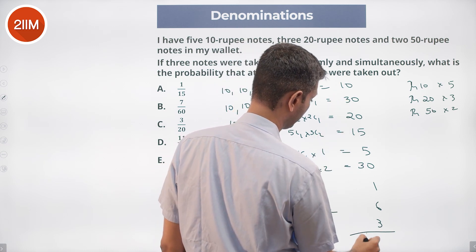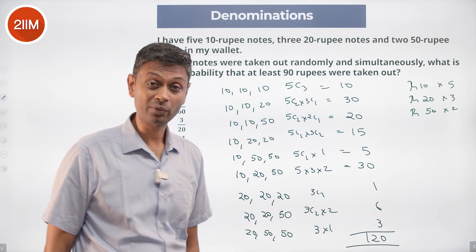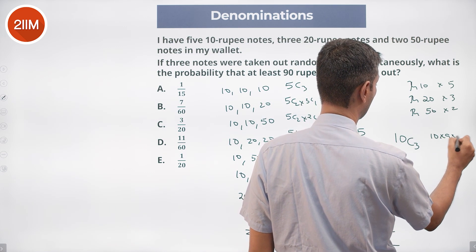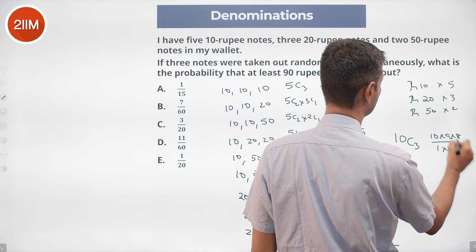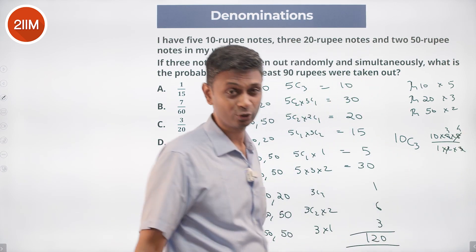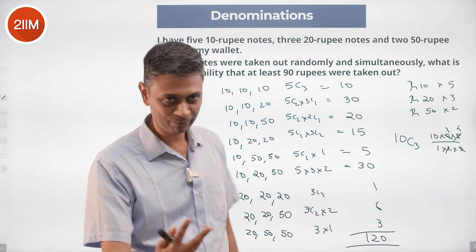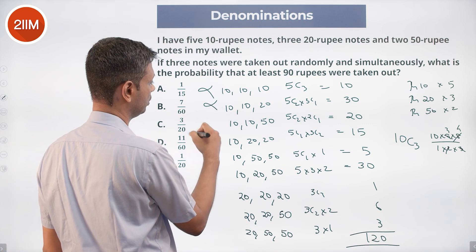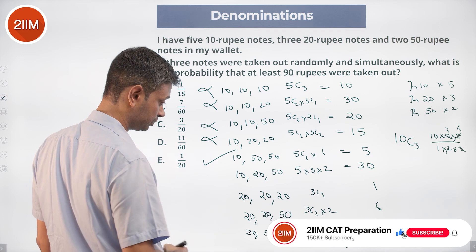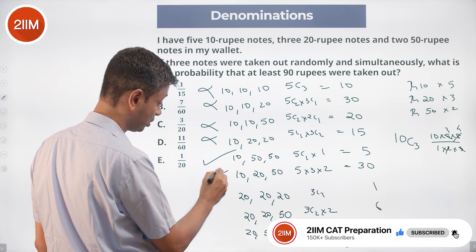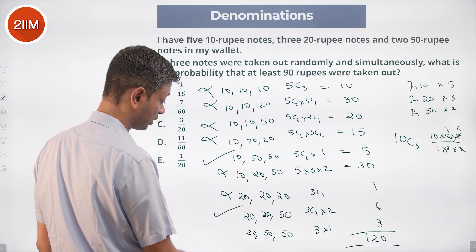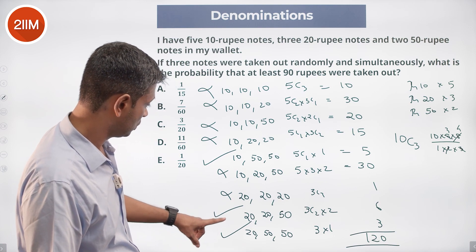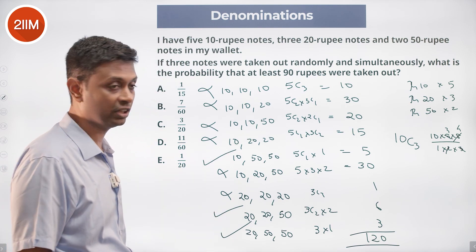80, 90, 120. Or we could have avoided all of this and said 10C3 = (10×9×8)/(1×2×3) — but where's the joy in that? Now, we need at least 90 rupees taken out. Not 10-10-10 (just 30), not 10-10-20 (just 40), not 10-10-50 (just 70). Those don't work.